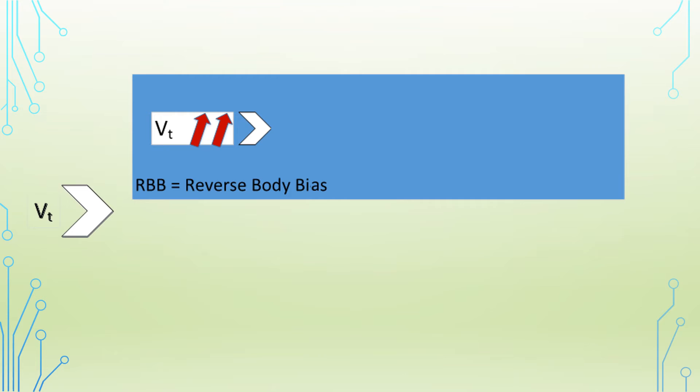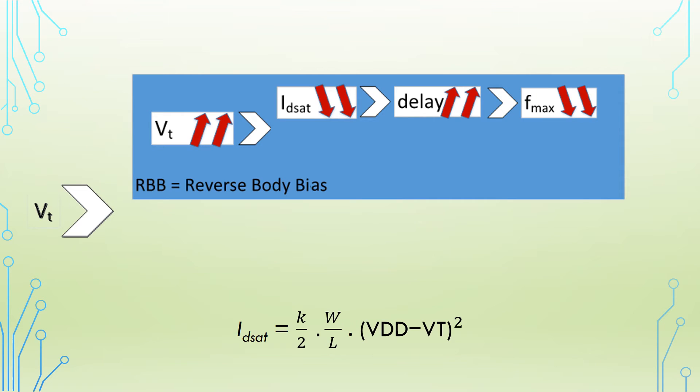When we want to talk about body bias effect on a transistor, we should mention two different cases. The first is when the transistor is idle: a reverse body bias may be applied, increasing the threshold voltage, which will decrease the saturation current, then increasing the delay, leading to decreasing the maximum frequency.